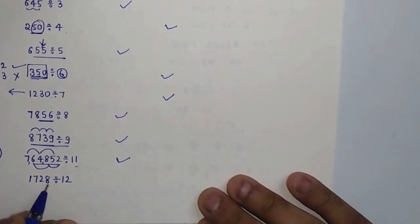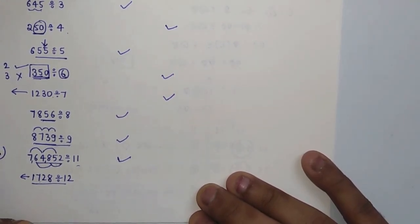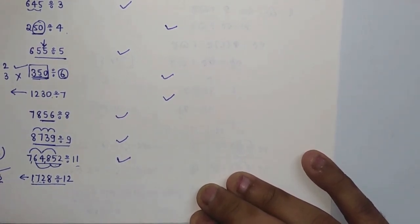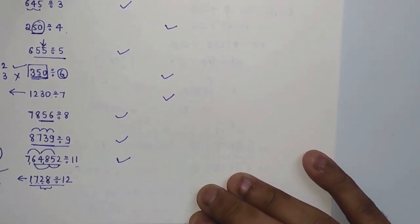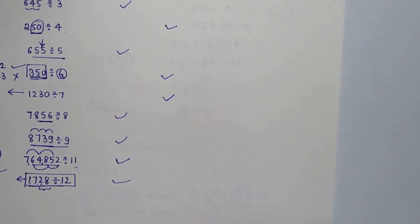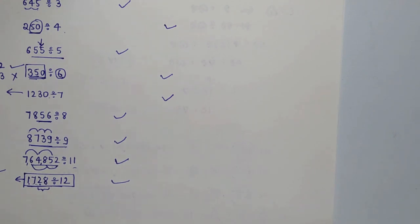Is 1728 divisible by 12? For 3: 1+7+2+8=18, which is divisible by 3 — passes. For 4: last two digits are 28, and 4×7=28, so divisible by 4 — passes. Since it is divisible by both 3 and 4, this number is divisible by 12. These are all the examples for the test of divisibility. I hope you liked the video; if you have any doubts, post them in the comments. Please like, share, and subscribe. Thank you for watching — have a great day!